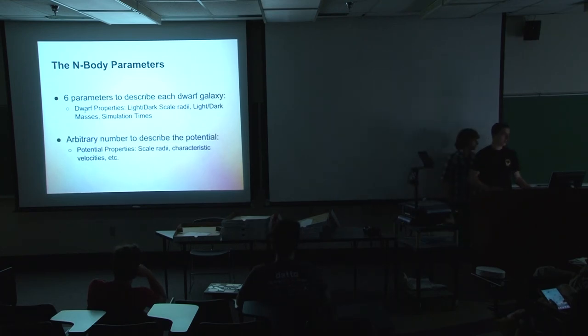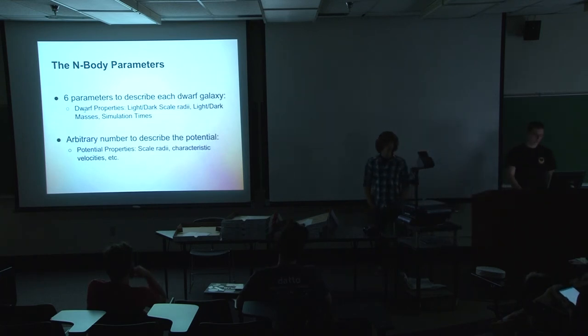Okay, so the n-body parameters, these are what we are trying to optimize with the program. So the six parameters are passed to the client from the work unit generator. And these parameters then are used in the Lua script to set up this information. I could explain exactly what they are, but I'll skip what matters. Currently, we're only trying to optimize the properties of the dwarf galaxies we're throwing in. But we'd like to eventually be able to start optimizing the potentials that we're throwing it into as well. So that we can kind of, like I said before, probe the different distributions of dark matter and light matter throughout the galaxy a little bit better.